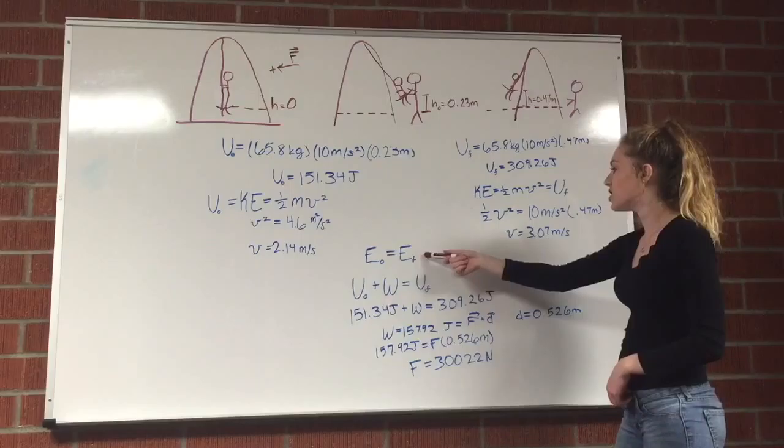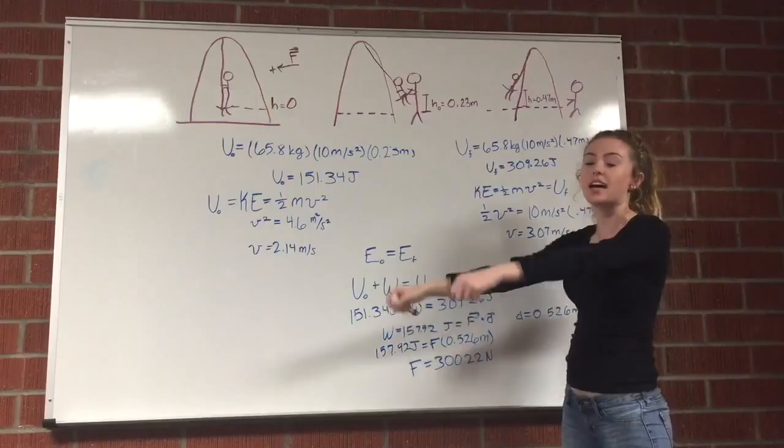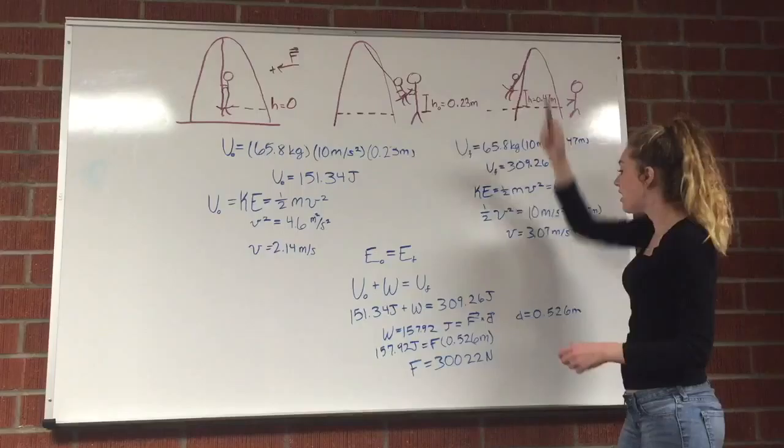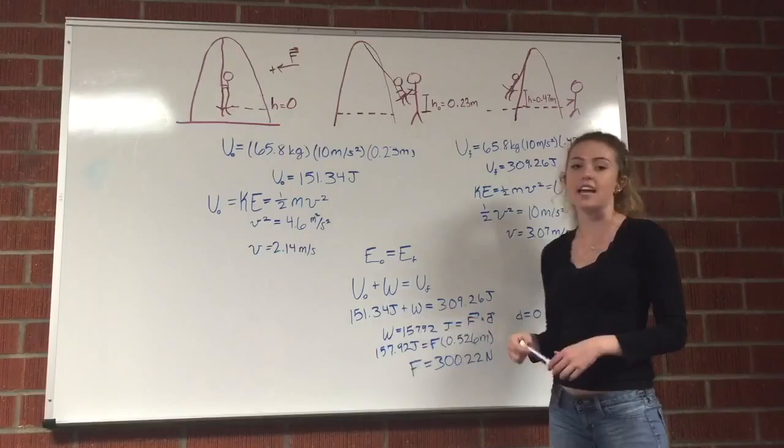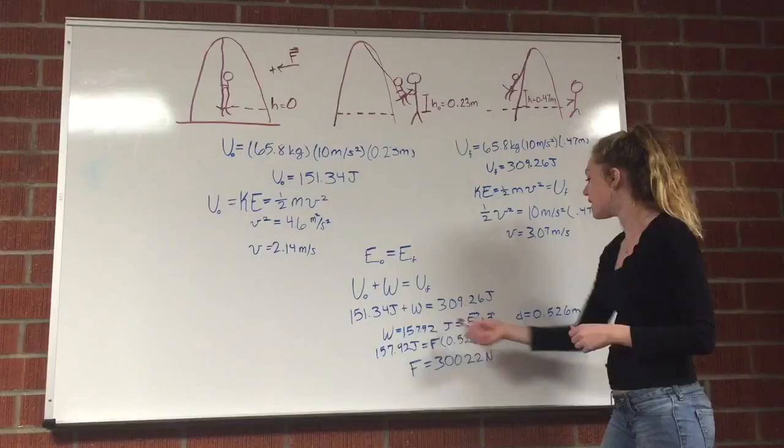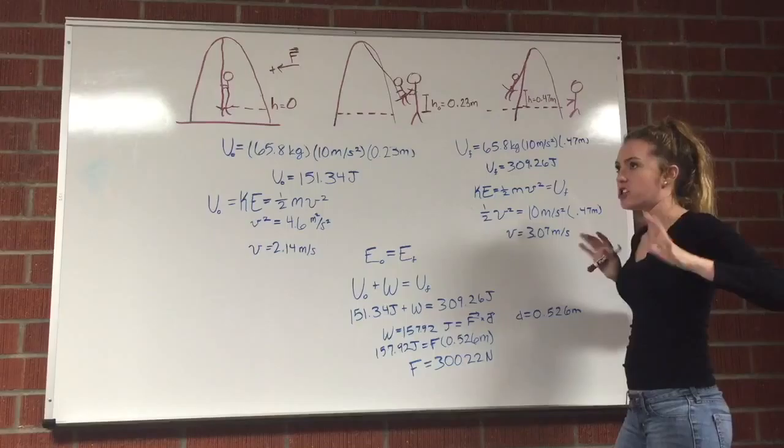To find the work and force that Jackie did on Cassie, we know that energy is conserved, so the original potential energy plus the work equals the final potential energy. Plugging in these values, we get that Jackie put in about 158 joules of work.